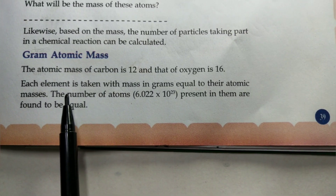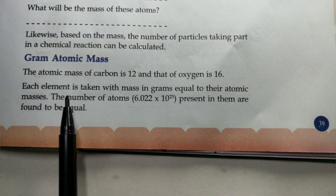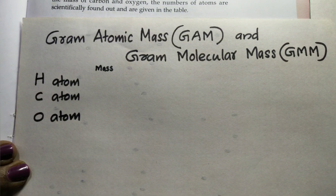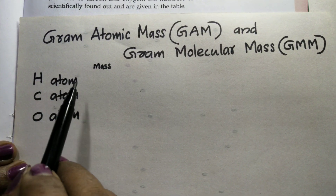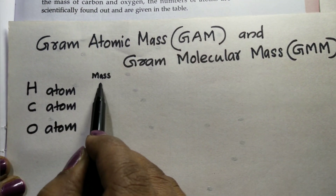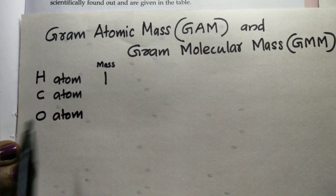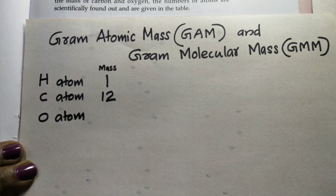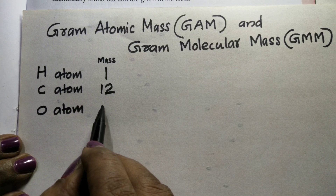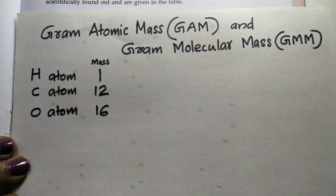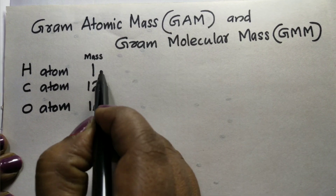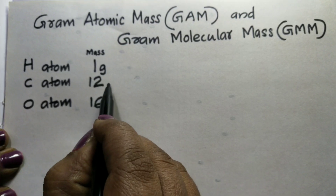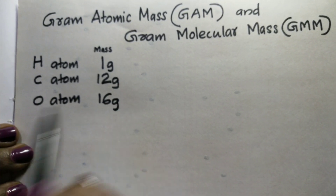We have studied the first chapter. Now let's look at gram atomic mass and atomic mass. The hydrogen atomic mass is 1 unit, carbon is 12, and oxygen is 16 units. In gram terms: hydrogen atom is 1 gram, carbon is 12 grams, and oxygen is 16 grams.